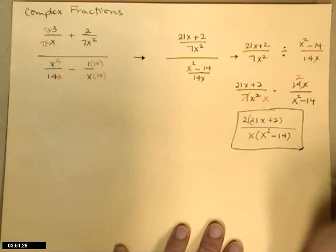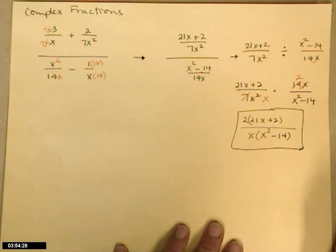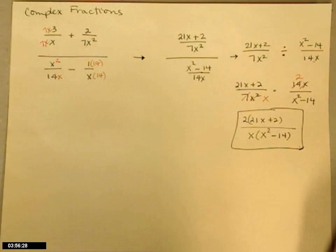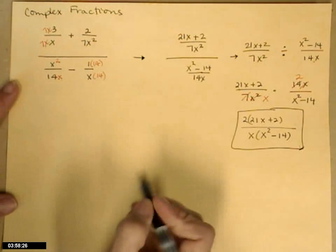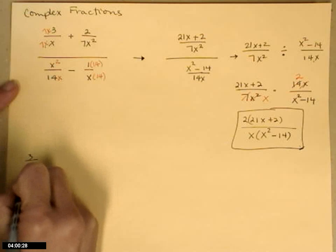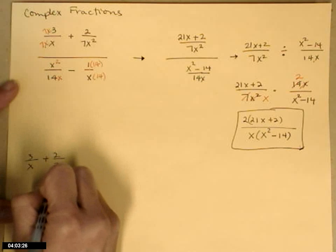In the denominator I have that x left over and then times x squared minus 14. Doesn't look all that simple, but at least I only have one fraction bar, which is what my goal is. So that's one way that we can go about simplifying complex fractions. Let me show you the other way that I typically do most often.